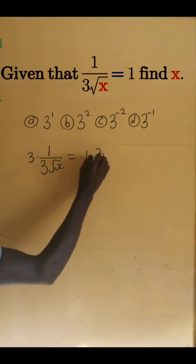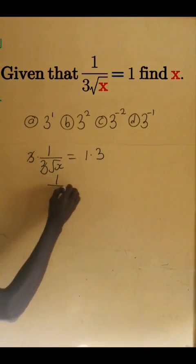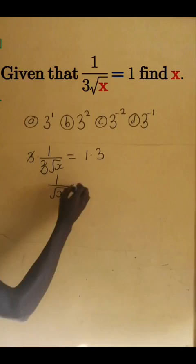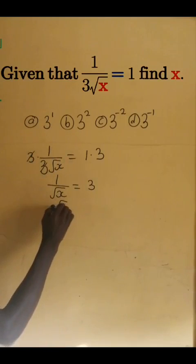1 divided by square root of x equals 3. Now if we turn each side upside down, we have square root of x divided by 1 equals 1 divided by 3.